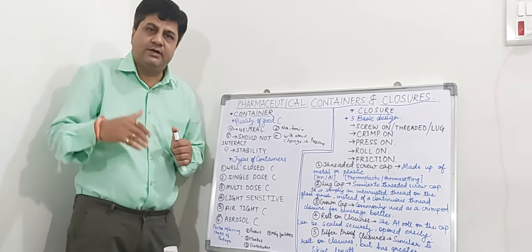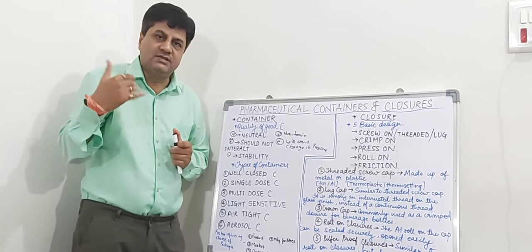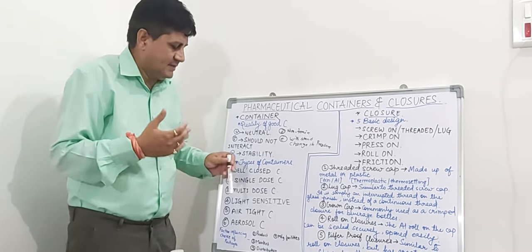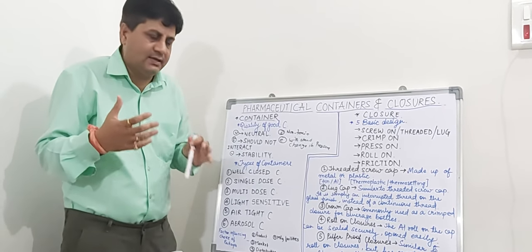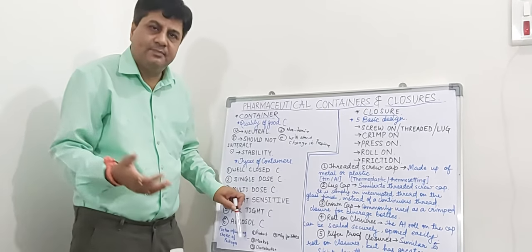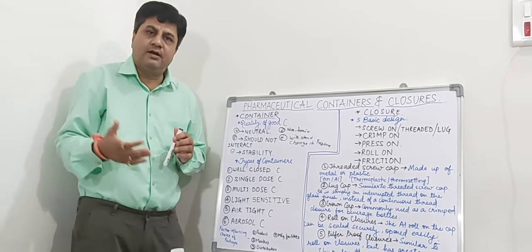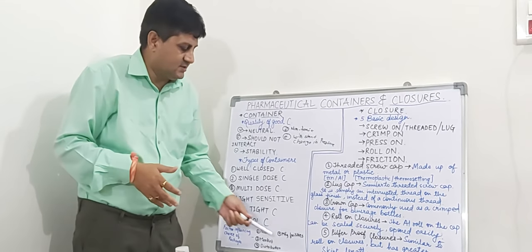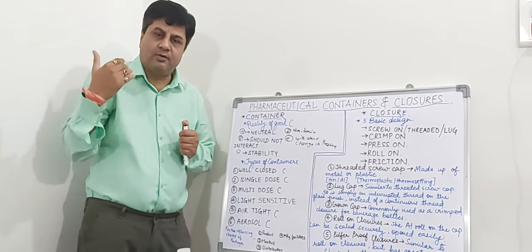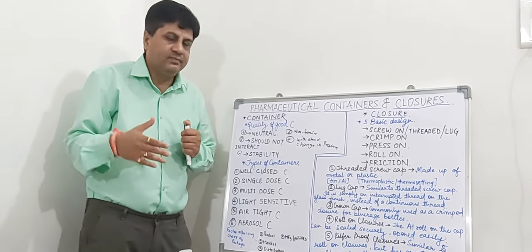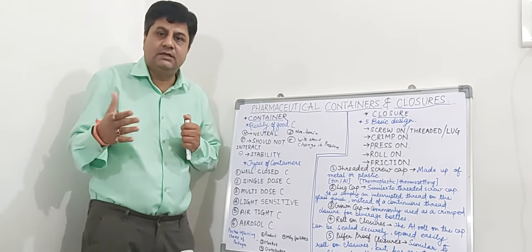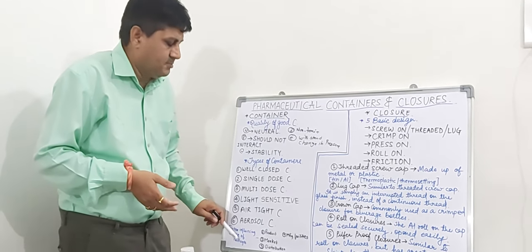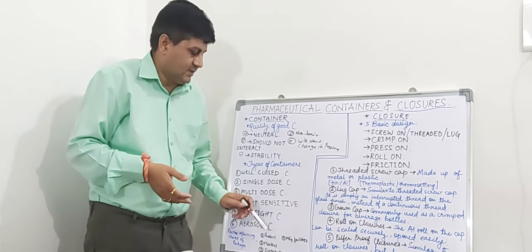The third factor is distribution — the distribution of the product from one part to another. Which vehicle we are using matters; if we are using a local vehicle, we have to pack it in a very sturdy container so there is no damage to the product. The last factor is the manufacturing facility — whether it has proper manufacturing capability and stability. Depending upon the stability of our product, we have to select the type of packaging.